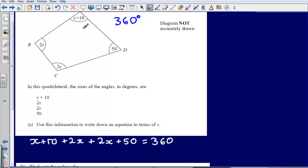So if I were to add all of those angles together, we know that because the angles sum to 360, it's going to add to 360.